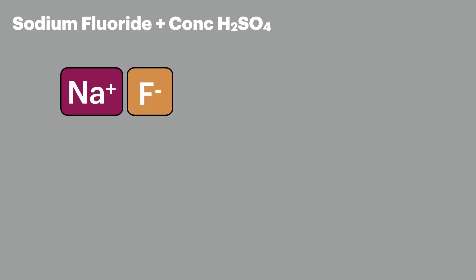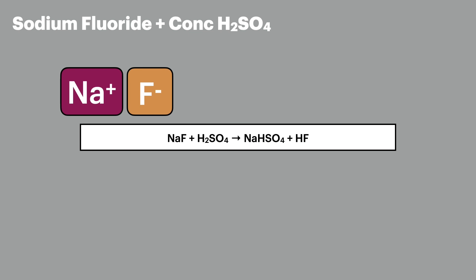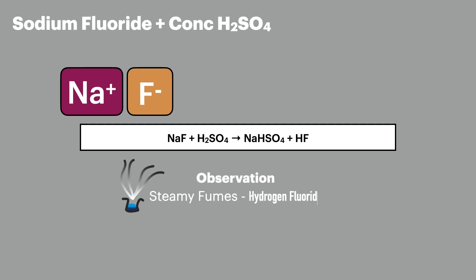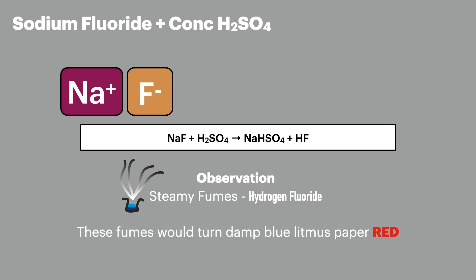Let's start by looking at the reaction of sodium fluoride with concentrated sulfuric acid. The reaction is straightforward, producing sodium hydrogen sulfate and hydrogen fluoride. These reactions are really exothermic, so you'll see the steamy fumes of hydrogen fluoride when it's released into the air. These fumes will turn damp blue litmus paper red, as hydrogen fluoride is acidic. The paper needs to be damp so the released gas can react with it.